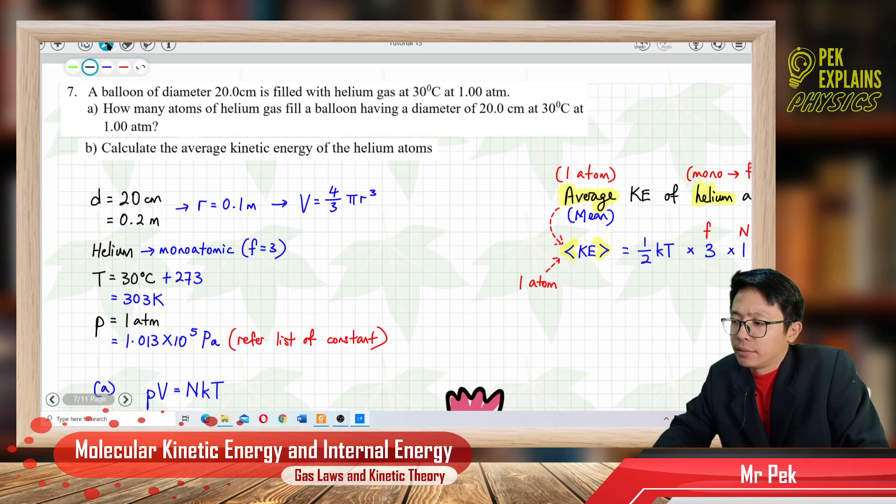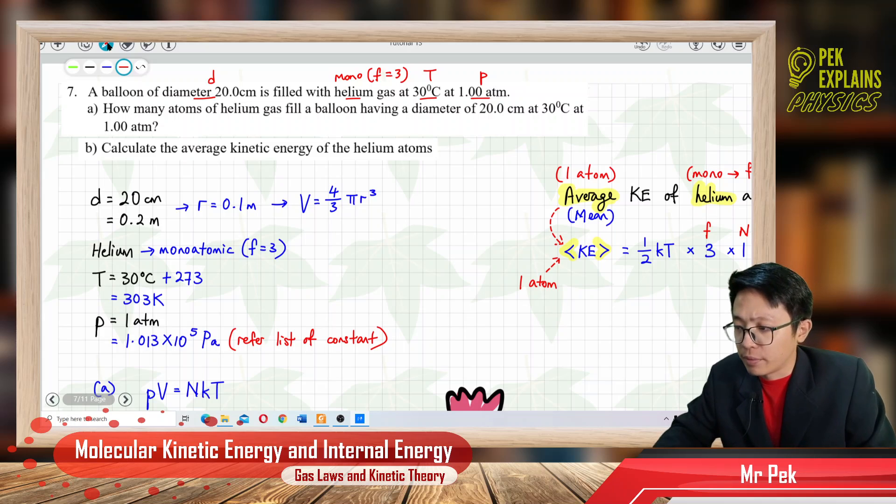The information given includes the diameter, we have helium gas which is monoatomic, so the degree of freedom is only 3. We have temperature at 30 degree Celsius and pressure at 1 atmospheric pressure. The question asks for how many atoms, that means the big N. You want the big N for this diameter, this temperature, and this pressure.